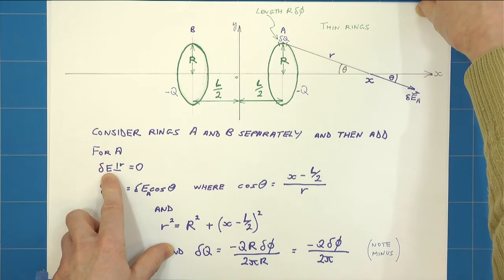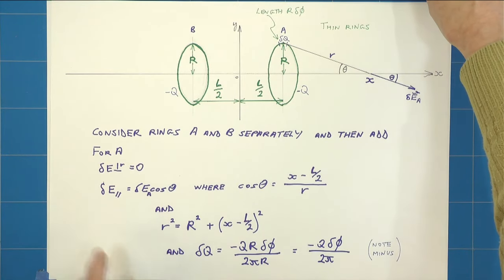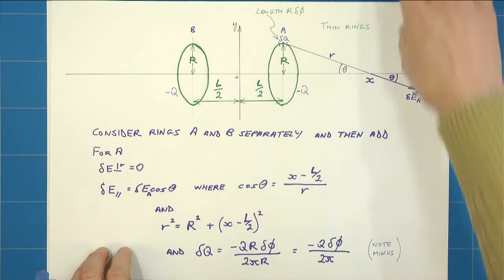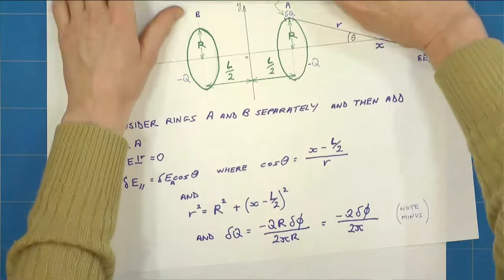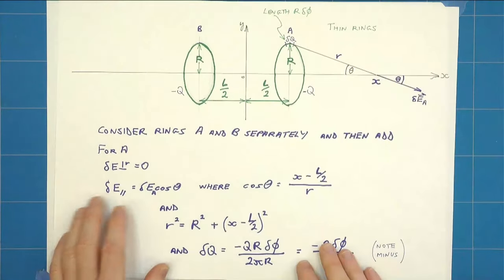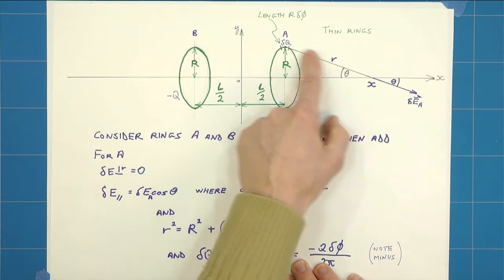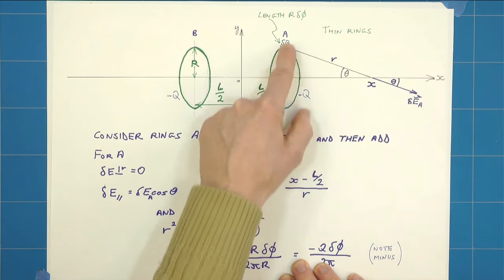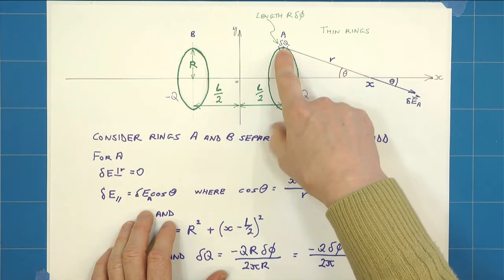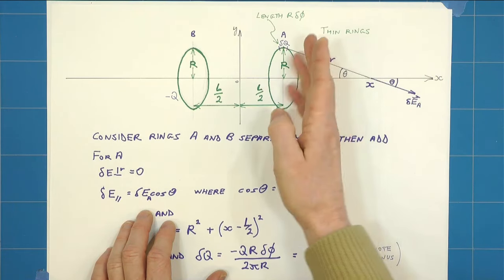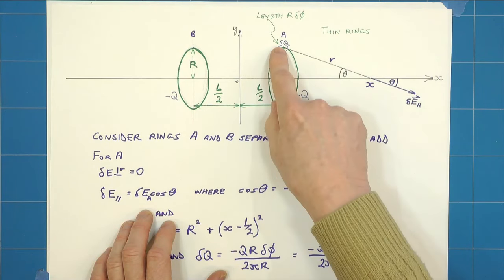From our perpendicular E is going to be zero, from this equation here we can then see by considering this triangle, a right angle triangle, and considering a charge delta q on the ring.